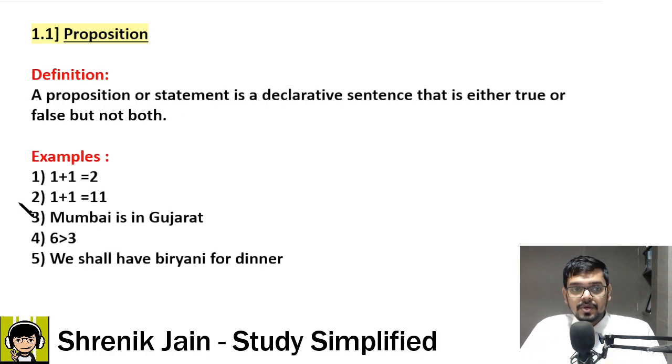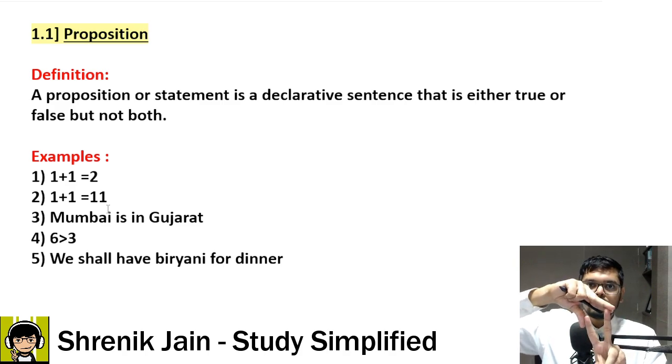Now see example 2, that is very critical. 1 plus 1 is 11. Your mind is like this is false, so not a proposition. Wrong. It is a proposition. Why? Because 1 plus 1 is 11 is a declaration plus it is a false sentence. So declarative sentence and either true or false. If two criteria are satisfied, then it is a proposition. Therefore, this is declarative plus false, a proposition.